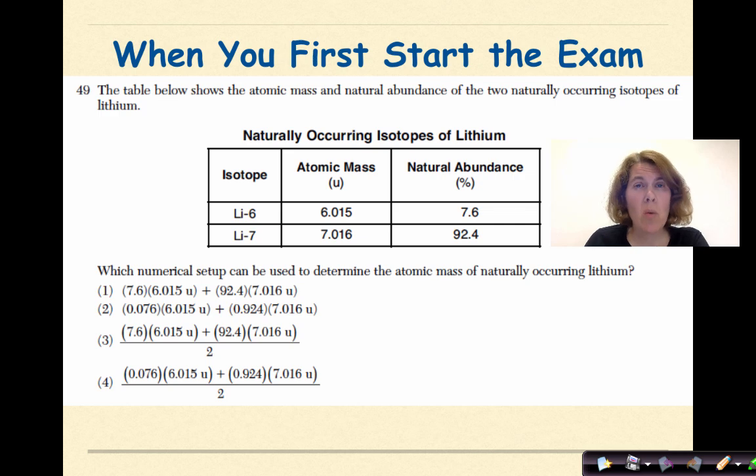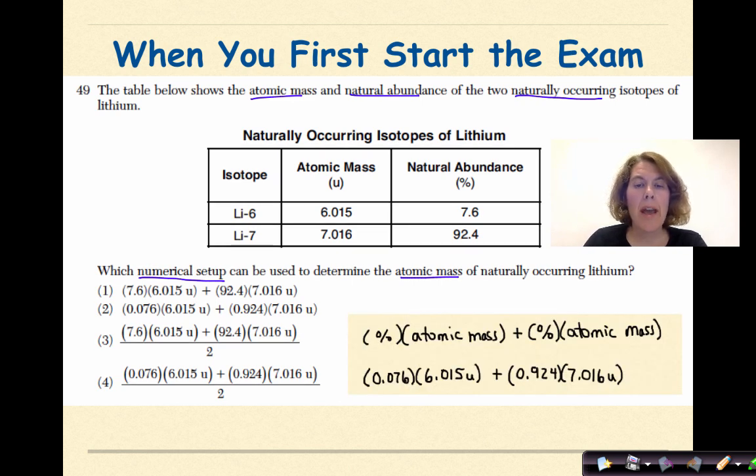Let's look at another common question where you need to know a formula that's not listed in your reference tables. The table below shows the atomic mass and the natural abundance of two naturally occurring isotopes of lithium. Which numerical setup can be used to determine the atomic mass of naturally occurring lithium? So the formula that you want to use here is natural abundance times atomic mass plus natural abundance times atomic mass. And I'm only saying that twice because I'm only given two different isotopes. So what I want to do is take that natural abundance, multiply it by the atomic mass, add it to the next isotope, its natural abundance, turning it into a decimal, times its atomic mass. This is the correct setup for this particular problem, which of course is answer number 2.